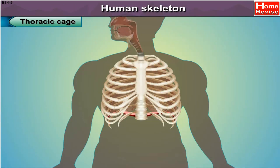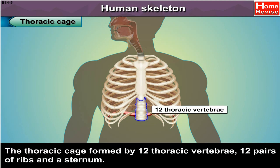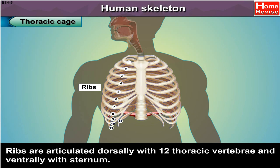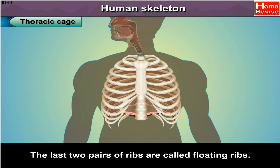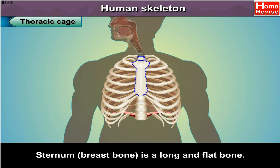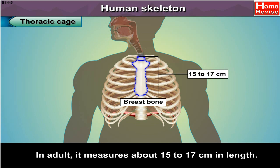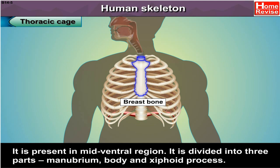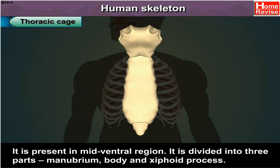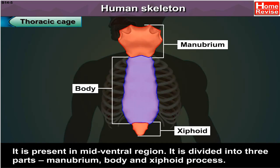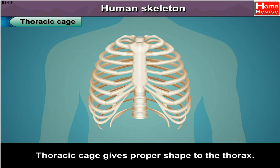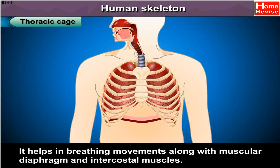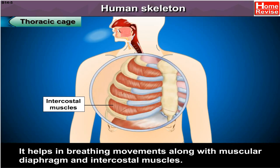The thoracic cage is formed by 12 thoracic vertebrae, 12 pairs of ribs, and a sternum. Ribs are articulated dorsally with the 12 thoracic vertebrae and ventrally with the sternum. The last two pairs of ribs are called floating ribs. The sternum, or breast bone, is a long and flat bone measuring about 15 to 17 cm in adults, present in the mid-ventral region, and divided into three parts: manubrium, body, and xiphoid process. The thoracic cage gives proper shape to the thorax and helps in breathing movements along with the muscular diaphragm and intercostal muscles.